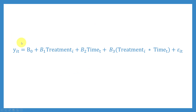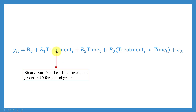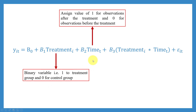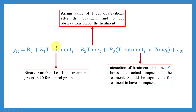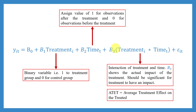In equation form, we have our dependent variable equal to a constant β0, plus β1 times Treatment — a binary variable equal to one if the individual or organization is in the treatment group and zero if in the control group — plus β2 times Time, which equals one after the treatment and zero before. Taking the interaction of Treatment and Time gives an interaction term. The coefficient β3 on this interaction term represents the actual impact of the treatment, and it must be statistically significant to conclude the treatment had an impact. This is the ATET — Average Treatment Effect on the Treated.